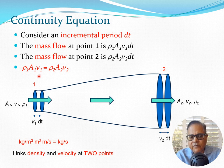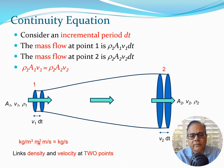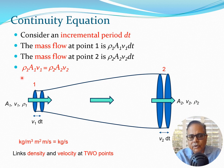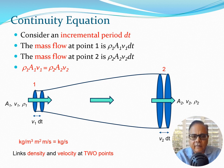Equating the two mass flows gives us ρ₁ A₁ V₁ = ρ₂ A₂ V₂ — the continuity equation of fluid flow. Checking dimensions: ρ is kg/m³, A is m², and V is m/s, so ρAV has units of kg/s, i.e., mass flow rate. Whatever kg/s enters at point 1, the same kg/s exits at point 2. This equation can be applied between any two points along the stream tube.